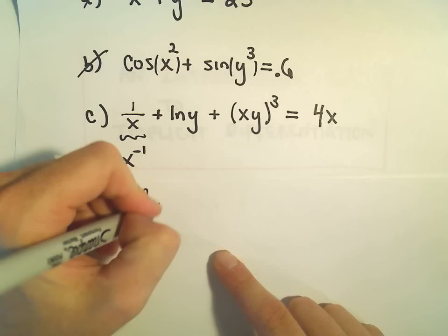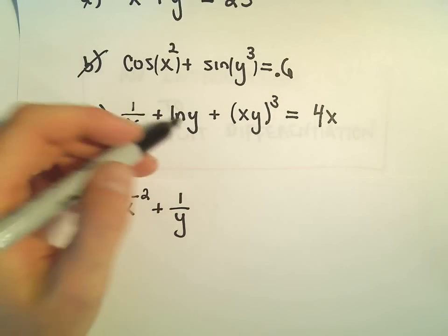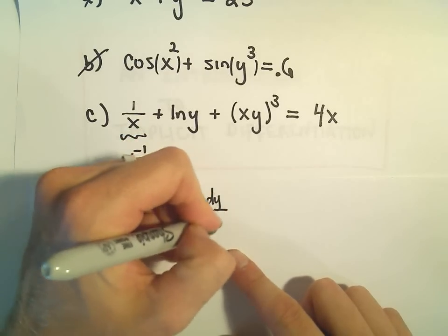The derivative of ln of y will get 1 over y, but again I've taken the derivative of something involving y. So now we have to tack on our dy dx.